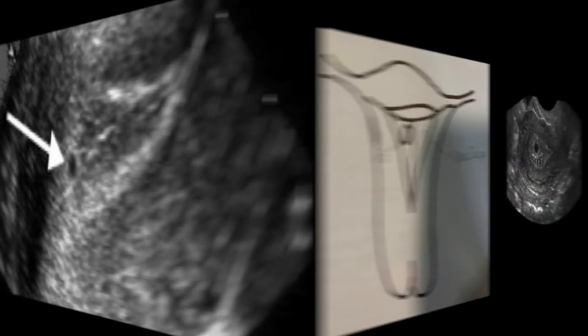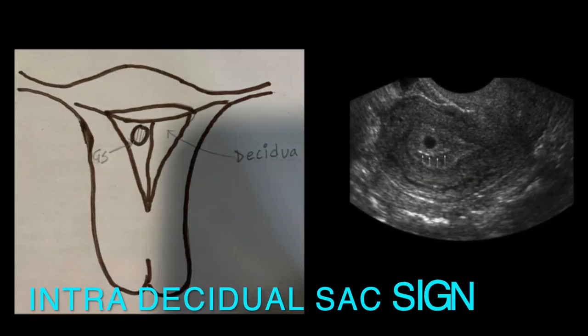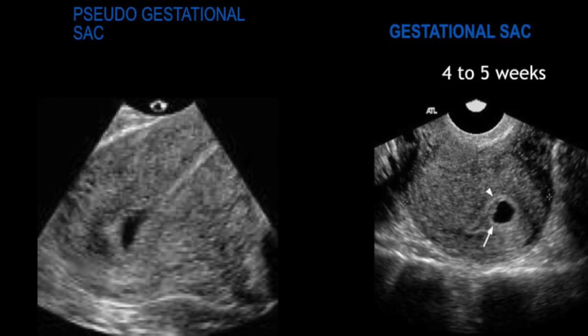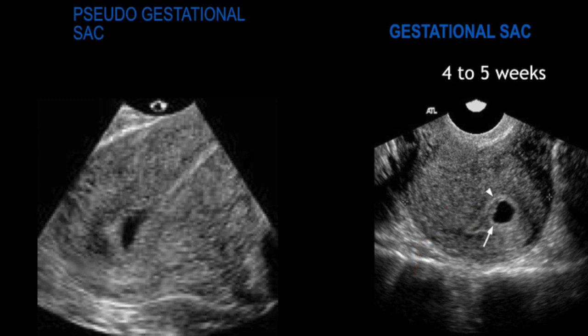This is described as the intra-decidual sac sign, which helps us distinguish between a simple fluid collection also labeled as a pseudo-gestational sac. As you can see on the left, a pseudo-gestational sac is more of an oval or oblong collection right in the center, and you don't see the collapsed uterine cavity, whereas a gestational sac is more eccentrically placed and you can see the central white line which is the collapsed uterine cavity.